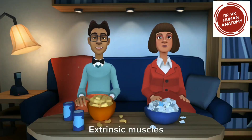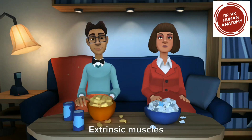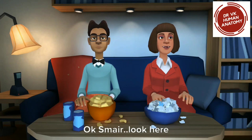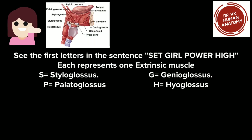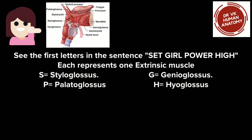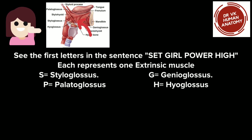Please explain extrinsic muscles. Okay, look here. See the first letters in the sentence 'said girl power high' — each represents an extrinsic muscle: S equals styloglossus, G equals genioglossus, P equals palatoglossus, H equals hyoglossus.